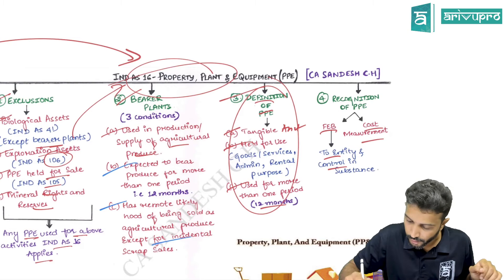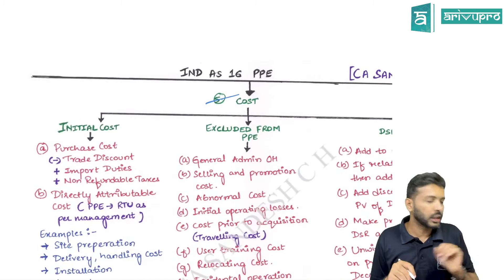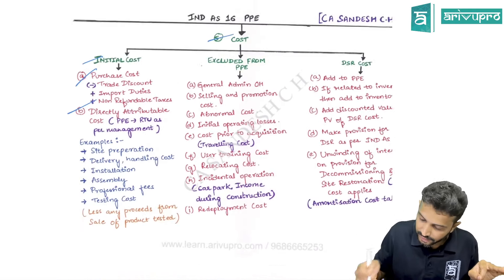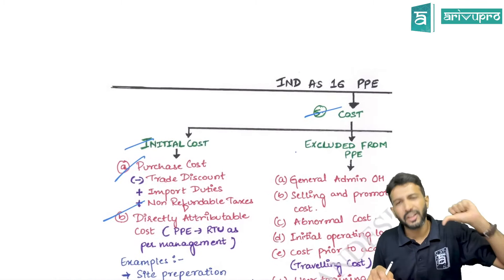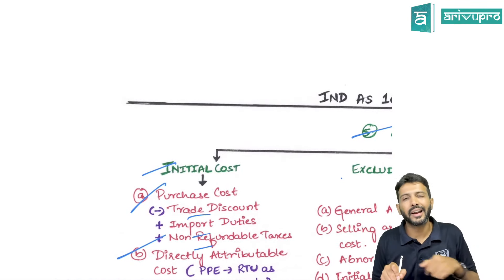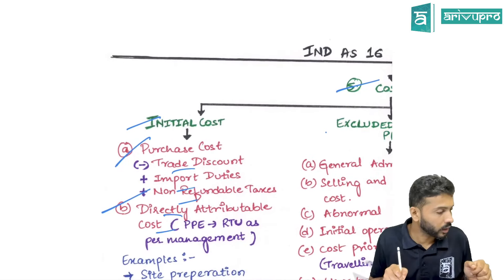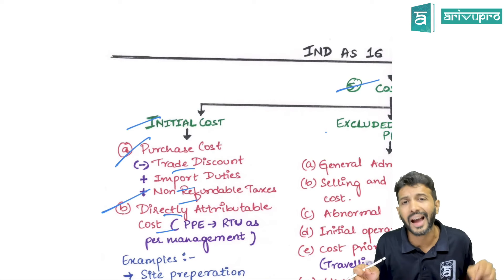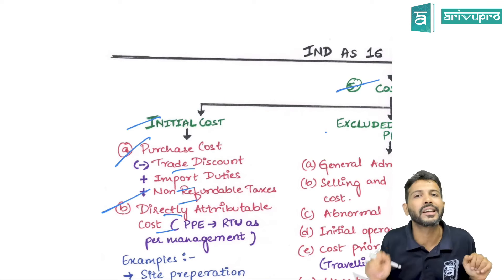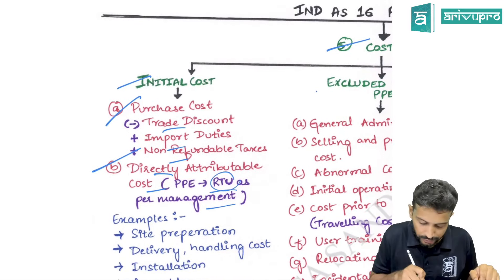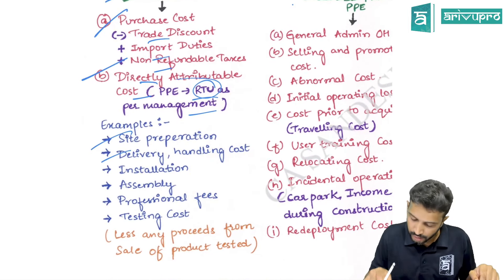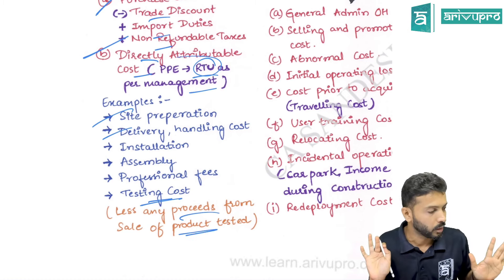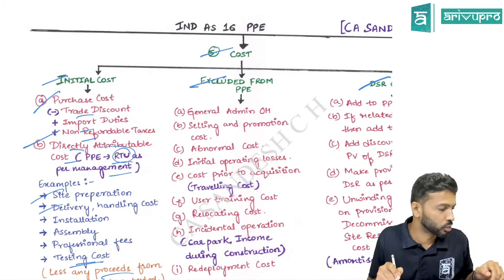Initially, all PPEs are recorded at cost. Cost comprises purchase cost, DAC (Directly Attributable Costs), and DSR (Decommissioning, Site Restoration). Under purchase cost, add import duty and non-refundable taxes; deduct trade discounts or rebates. DAC means costs incurred to bring the PPE to its present location and condition so it can function as intended by management — essentially making the asset ready to use. Examples include site preparation, delivery, and testing charges. Any proceeds from the sale of tested products must be deducted.